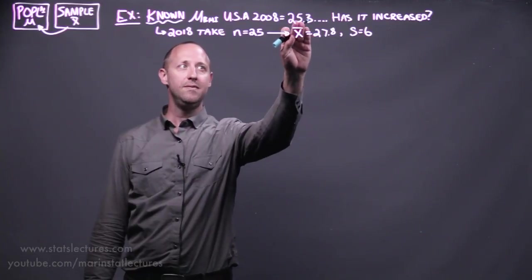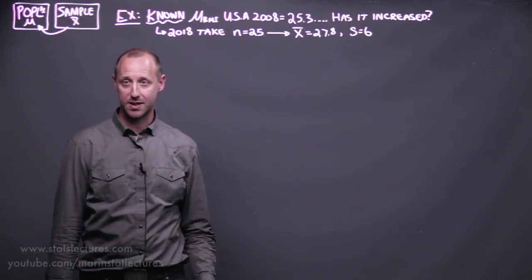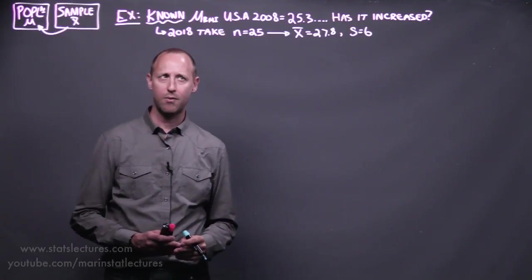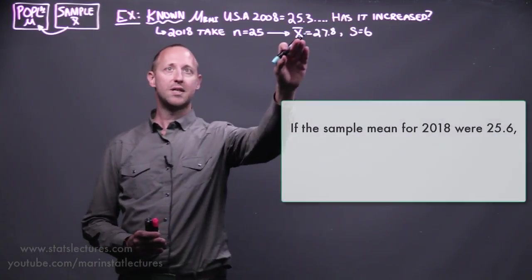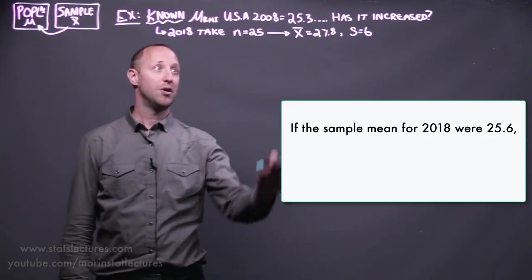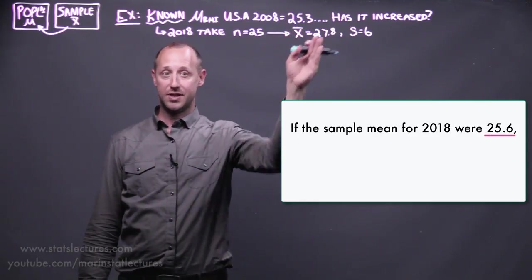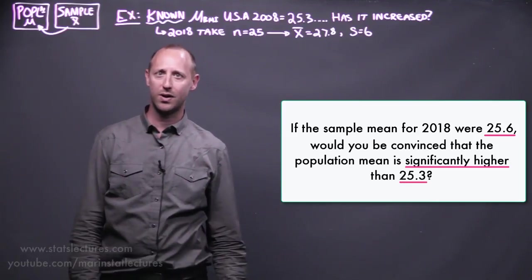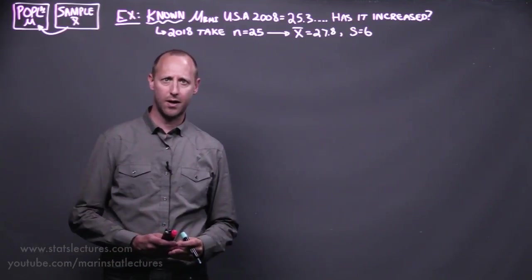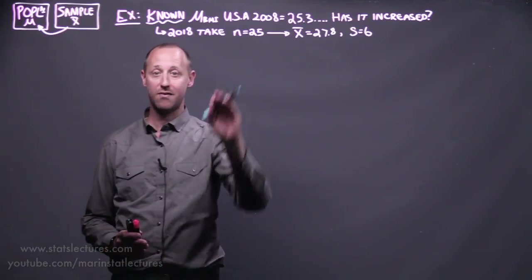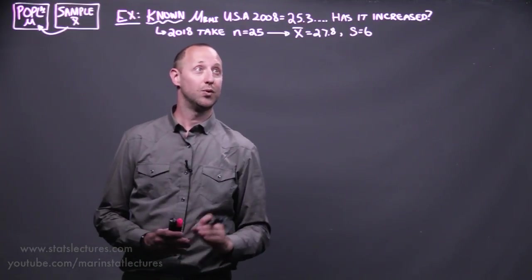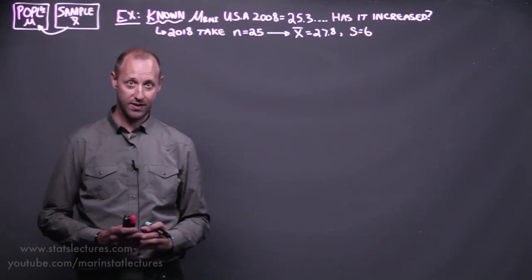Now while this estimate is a little bit above what it was in the past, we'd like to know is it significantly higher. What we mean by that is, suppose that the mean in 2018 came out to be 25.6. Would you be convinced that it's really significantly higher than 25.3? Probably not. Our sample is based on only 25 individuals. What if our sample mean came out to be 26.3? Would you be convinced?